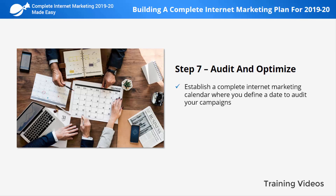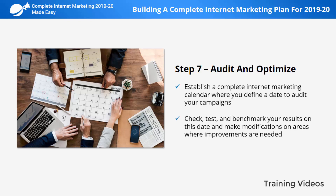Step number seven: audit and optimize. Establish a complete internet marketing calendar where you define a date to audit your campaigns, check, test, and benchmark your results, and make modifications in areas where improvements are needed. For example, if one of your articles is getting low bounce rates from social media traffic but a low number of visits from search, that might mean you need to modify the article headline and metadata.